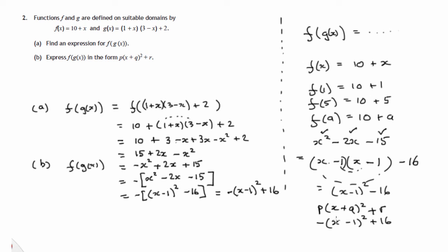And you're comparing minus x minus 1 all squared plus 16. Yes, we've got it in that form. p is negative 1, q is negative 1, and r is 16. We're not asked to give the values of p, q, and r, just to write it in that form. So there it is in that form.